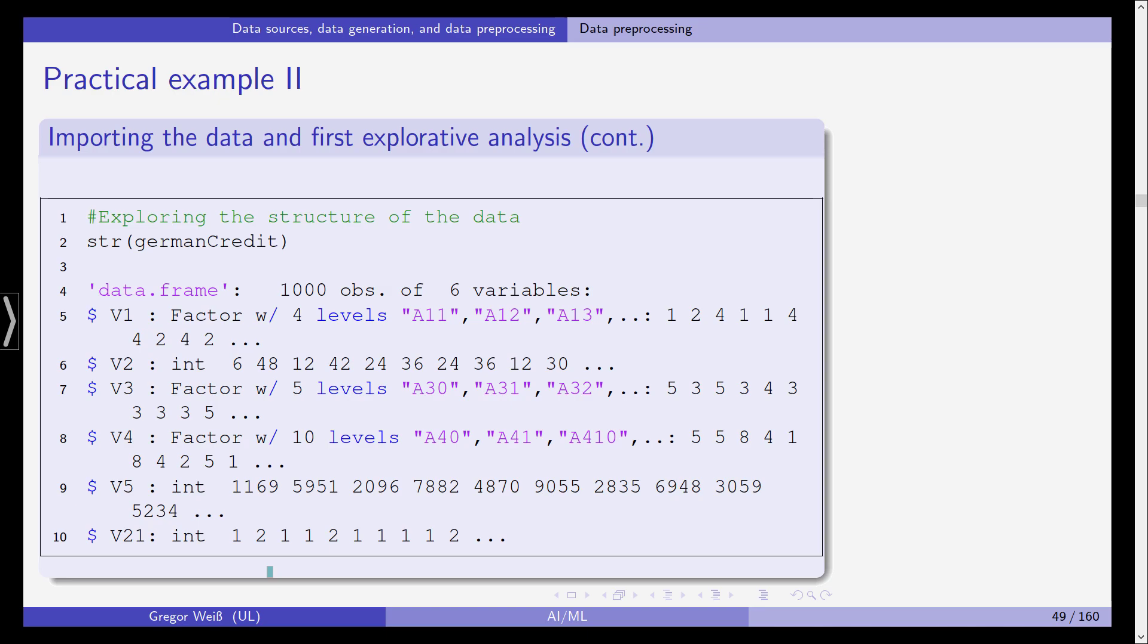We are using columns 1 through 5 and 21, so we'll end up with just six columns but we are keeping all the rows. We're taking German credit, reducing it to columns 1, 2, 3, 4, 5 and 21, and then again writing it into our data array German credit.